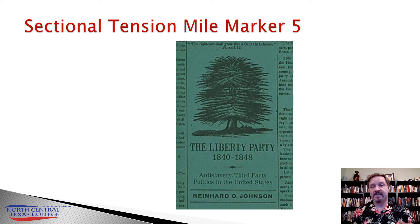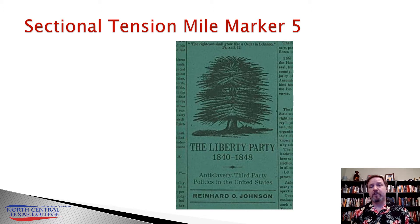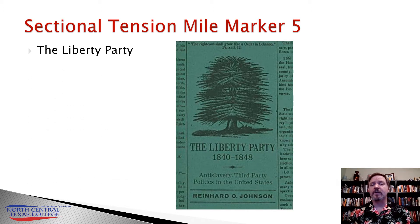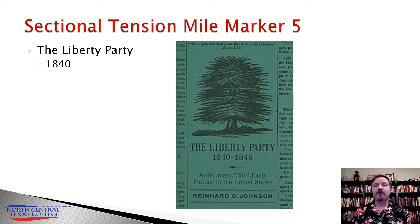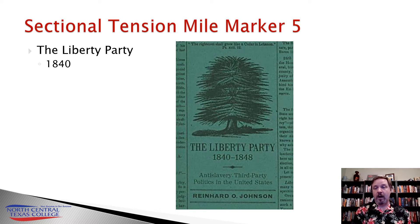Commonwealth v. Aves established the precedent that slavery was local but liberty was general. This would be built upon with sectional tension mile marker number five: the creation of the first abolitionist political party, the Liberty Party, created in 1840. This was the first attempt to take the moralistic abolitionist movement out of the realm of moralism and into the realm of politics, where some degree of compromise is also required.